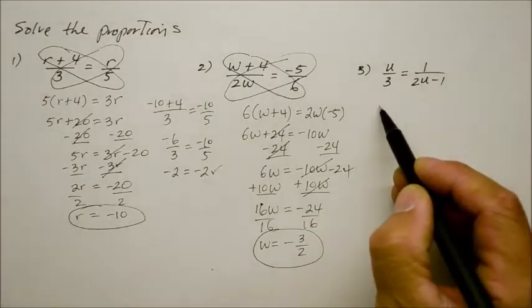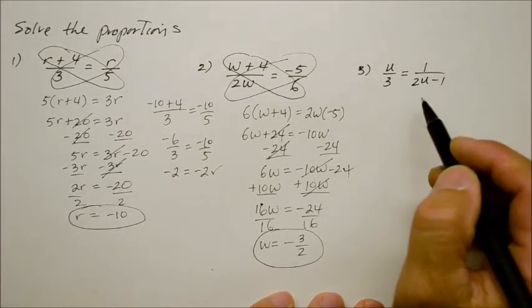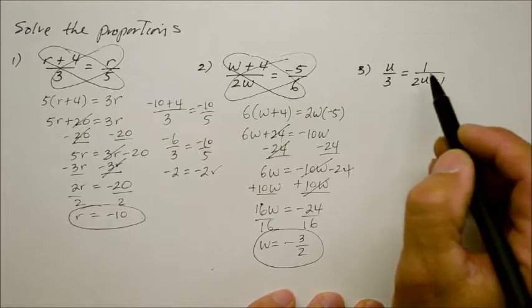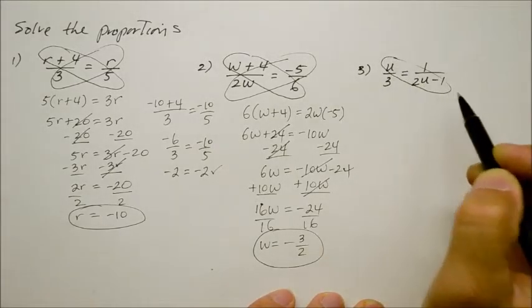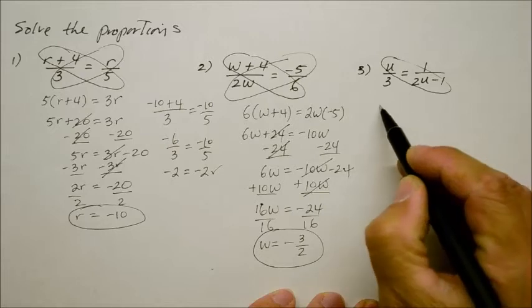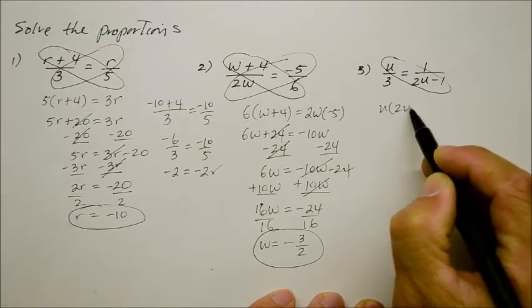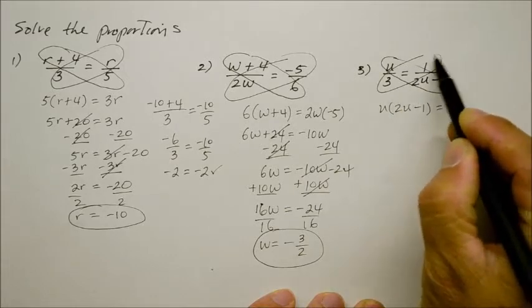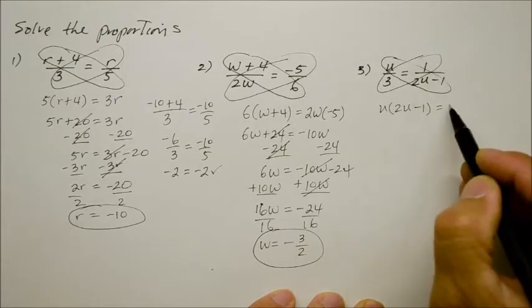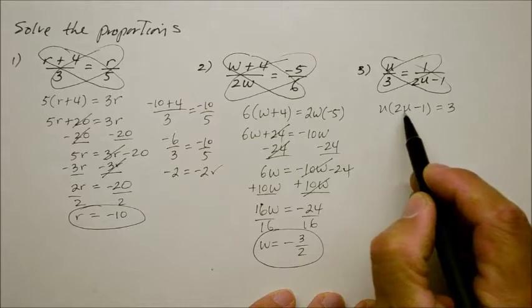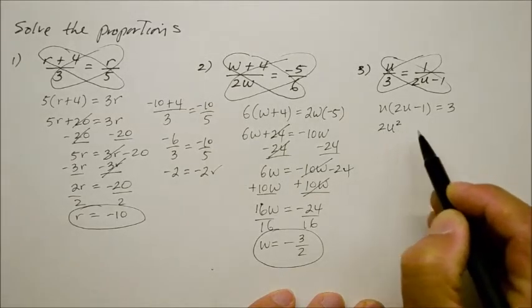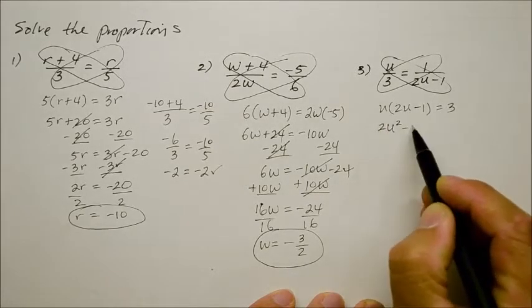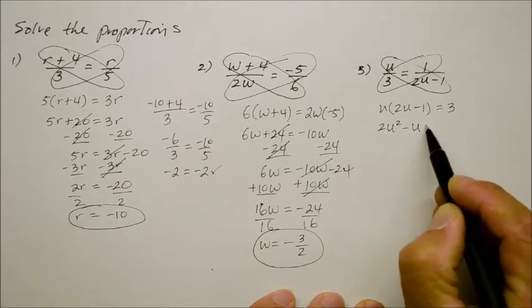And number 3, same thing again. It's going to come out a little different, but it can be done. So we're going to cross multiply the u with the 2u minus 1. So we get u times the quantity of 2u minus 1. On the right side, this one's easy. 3 times 1, which is 3. Do my distributive property, we get 2u squared minus u times 1 is u is equal to 3.